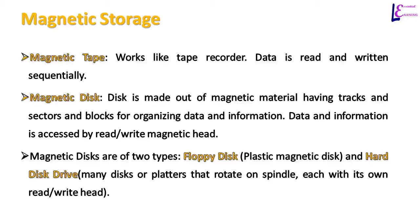We will discuss magnetic, optical, and flash storage devices. Magnetic storage devices were one of the earliest storage devices, the first being magnetic tape. Magnetic tape has the same working mechanism as a tape recorder; data on magnetic tape is read and written sequentially. In earlier computers, magnetic disk completely replaced magnetic tape.